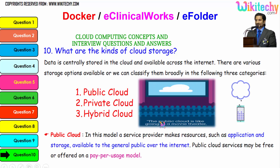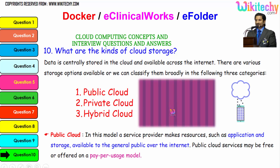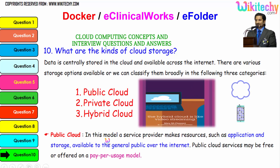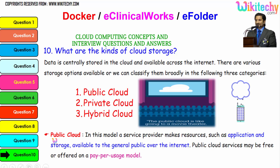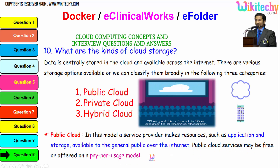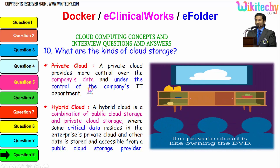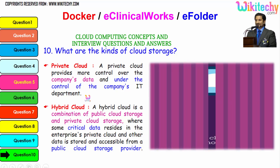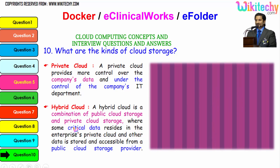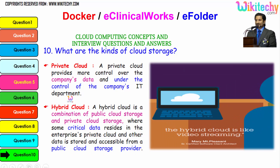The public cloud is like going to a movie theater, private cloud is like owning a DVD at home, and hybrid cloud is like video streaming — a mix of private and public. In the public cloud model, a service provider makes resources such as applications and storage available to the general public over the internet, either free or on a pay-per-usage model. A private cloud provides more control over the company's data under the IT department. A hybrid cloud is a combination of public and private cloud storage, where critical data resides in the enterprise private cloud and other data is stored in a public cloud provider.